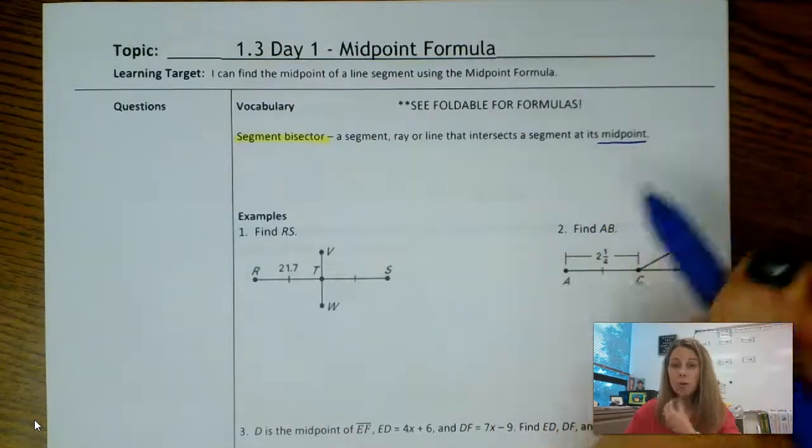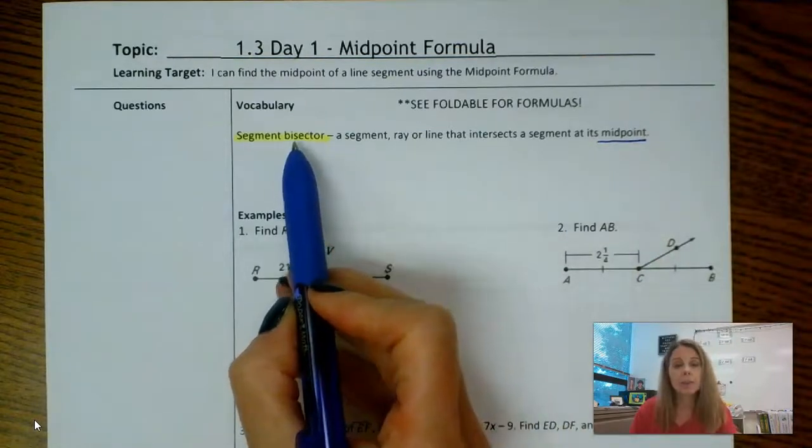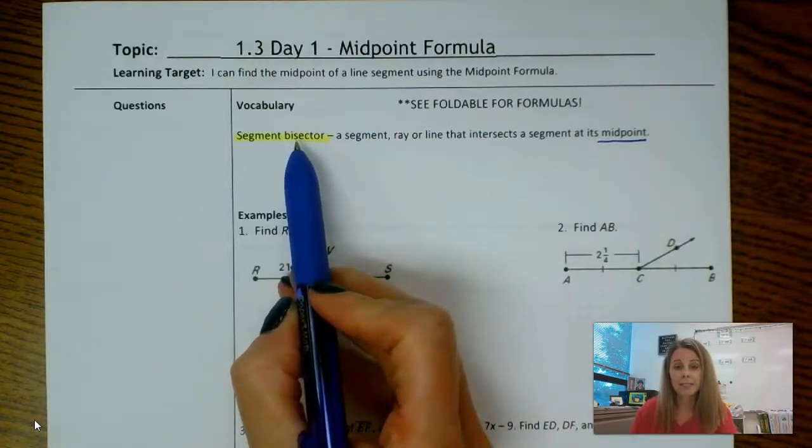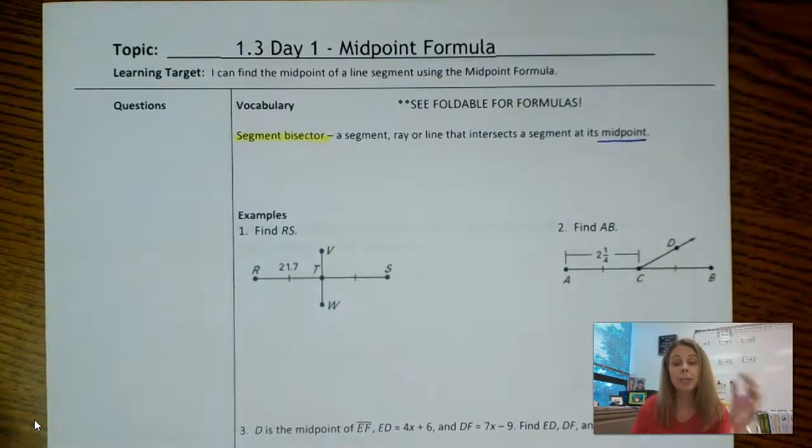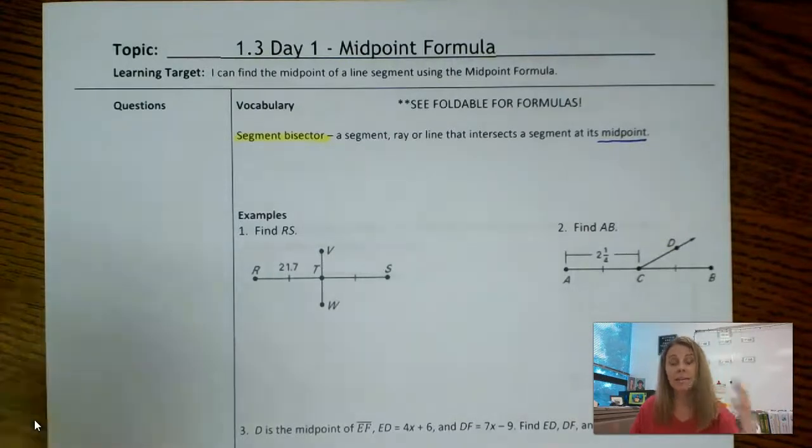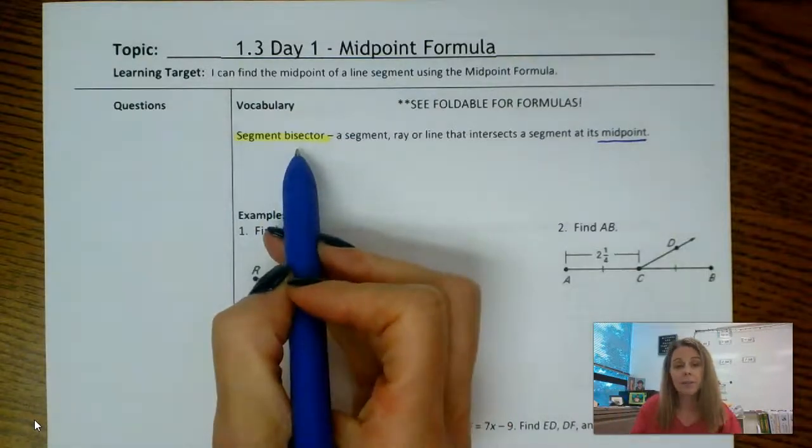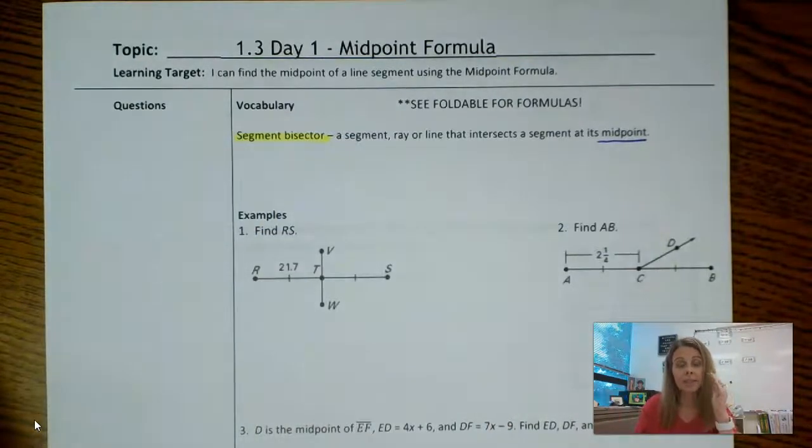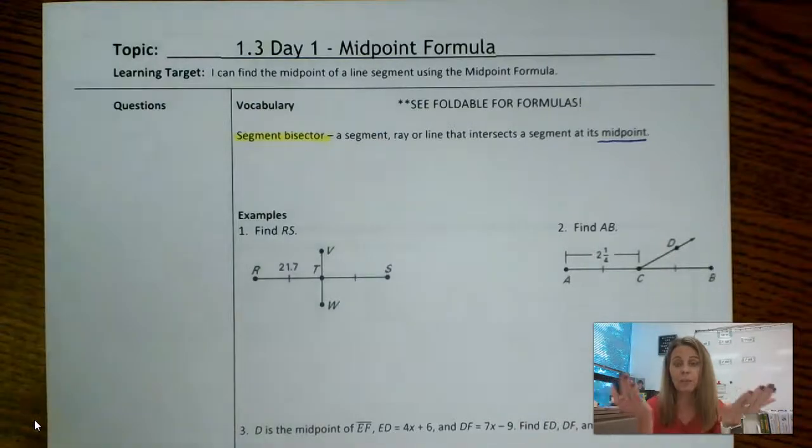So the important thing here is the word bisect. Think about the word intersect. To intersect something is to just cross it, like an intersection on a road where two roads cross each other. Bisect, on the other hand, is an intersection but exactly in the middle. To bisect something means to intersect something at the middle, which chops it into two equal parts.